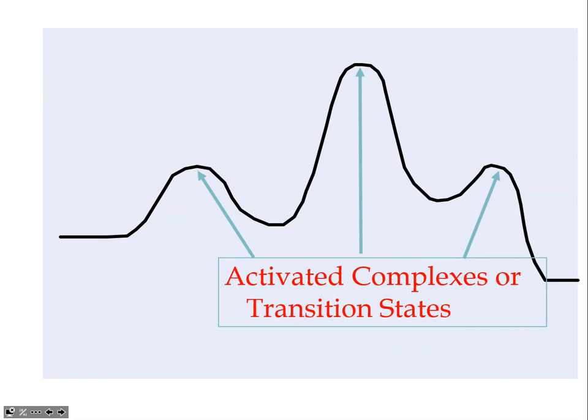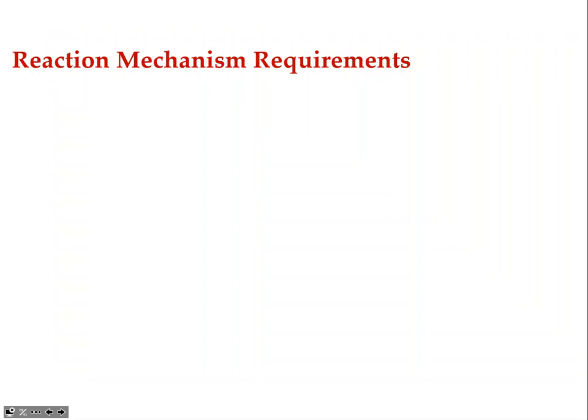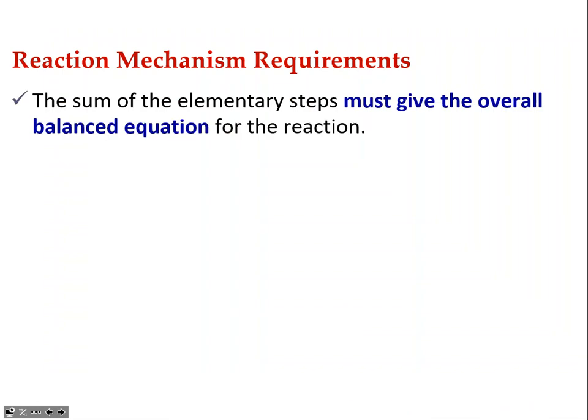Now, reaction mechanism requirements: in order to determine that a mechanism is valid for a particular reaction, you have to make sure that the elementary steps give the overall balanced reaction when you cancel them down — like we did in Hess's Law and with equilibrium. The mechanism must agree with the balanced equation.